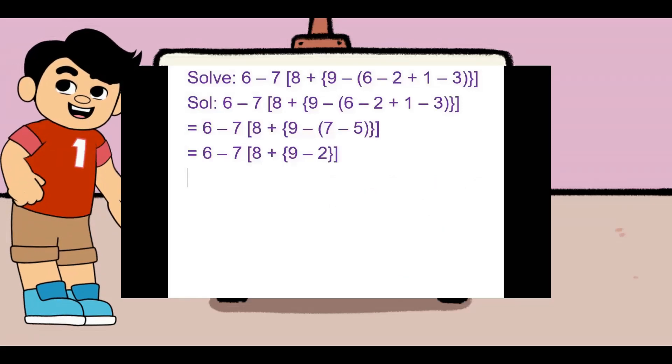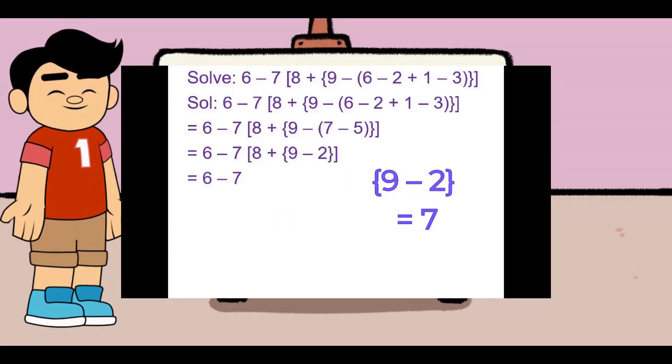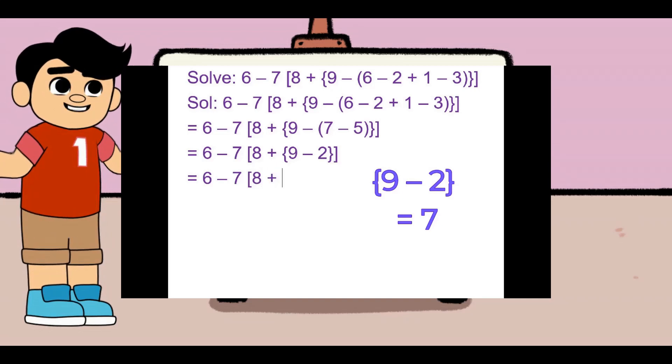Now we have to solve the middle bracket according to BADMA's rule. Subtracting 2 from 9 in the middle bracket gives 7.